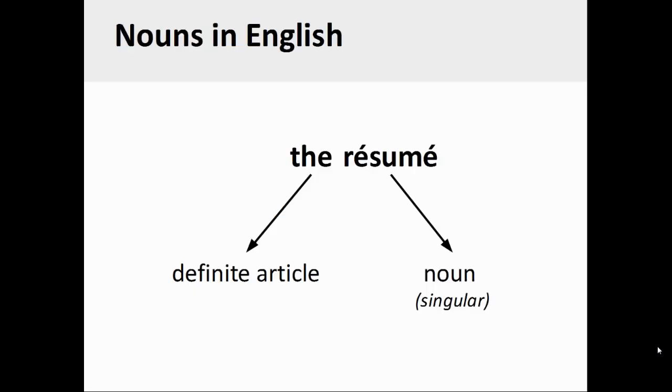As you see with the example on the screen, nouns in English usually do not manifest any grammatical gender, although they do distinguish between singular and plural forms. The definite article that precedes both singular and plural forms of the noun is always the.